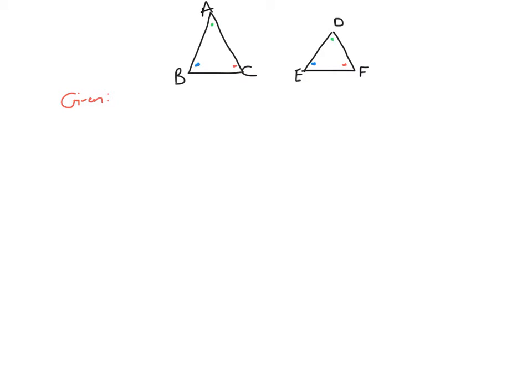So in this question we're given two similar triangles ABC and DEF. You'll see in some books they'll actually label each of the angles, but I've just marked them with my green dot as the same angles, my blue dot as the same angles, and my red dot as the same angles, which is absolutely perfect.